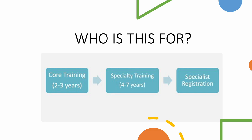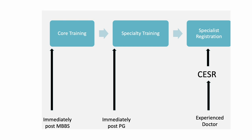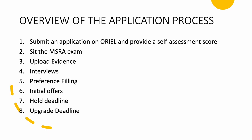If you remember from the last video, we discussed the CCT route to getting on the specialist register, which generally has two parts: core training and specialty training. The core surgical training program is essentially for doctors who want to pursue a surgical career in the UK and who are entering the NHS immediately post-MBBS with not much experience in surgical fields from back home. I will link the core surgical application handbook in the description box below and I've broken down the application process into a few steps for your convenience.